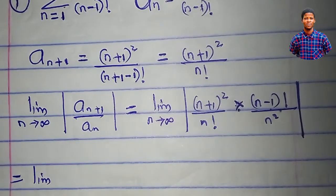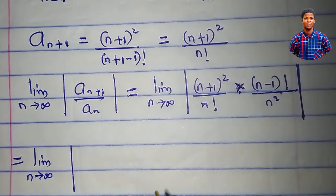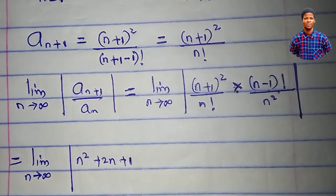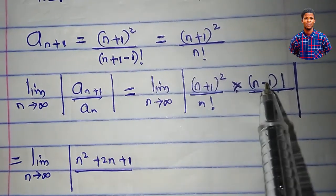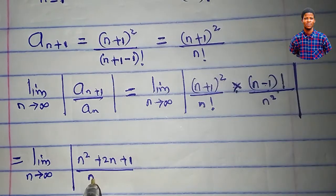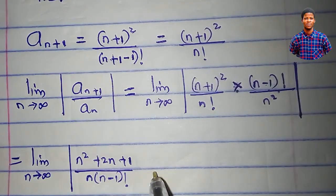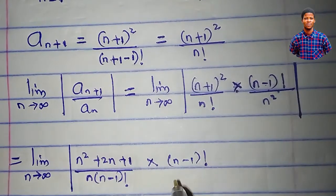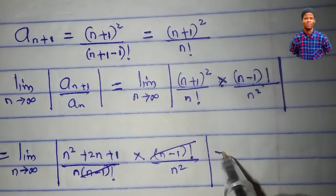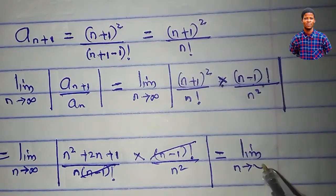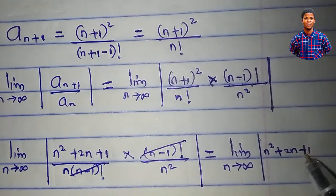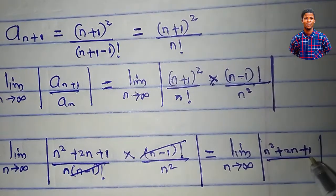We expand n plus 1 squared to get n squared plus 2n plus 1. Now, n factorial equals n times n minus 1 factorial, so the n minus 1 factorial terms cancel, leaving us with the limit as n approaches infinity of n squared plus 2n plus 1 all over n times n squared, which is n cubed.